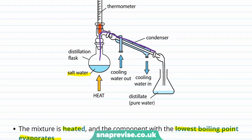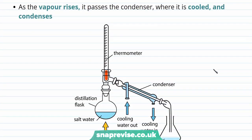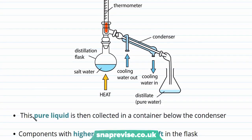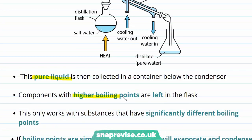The condenser is kept cool by the action of water which flows around the pipe on the outside of the condenser. Therefore, as the vapour enters the condenser, it is cooled down and it condenses — which just means it goes from gas back to liquid. The pure liquid can then be collected in a container below the condenser, whereas any components of the initial mixture with a higher boiling point will be left in the flask.